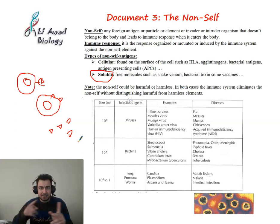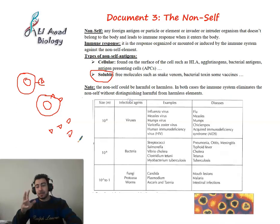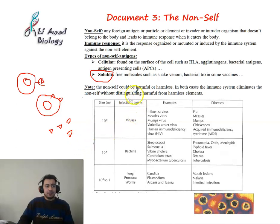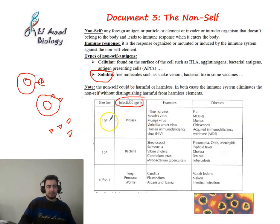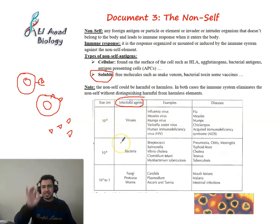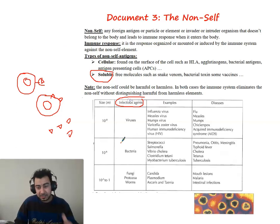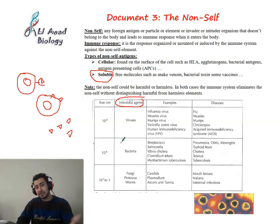Not all pathogens are microbes - some are larger, like worms, which we can observe with the naked eye. The first infectious agents are viruses, which are around 10 to the power of minus 8 meters in diameter - very tiny with respect to our body cells. This table is for general knowledge but note the diseases that may appear in exam questions.